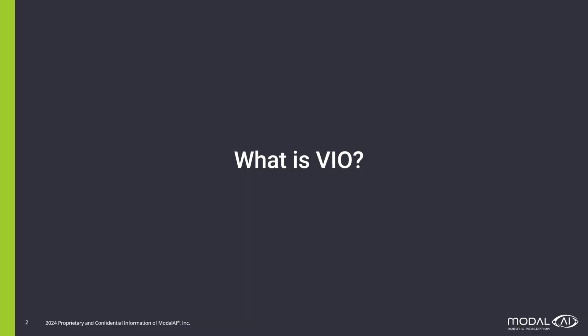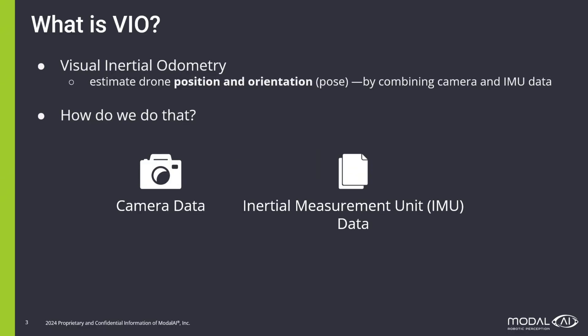So to start, what is VIO? VIO stands for Visual Inertial Odometry, and it is a technique that we use to estimate drone position and orientation by combining camera and IMU data.